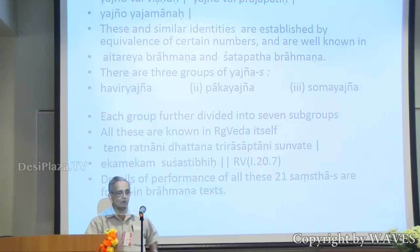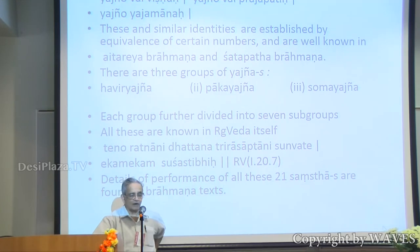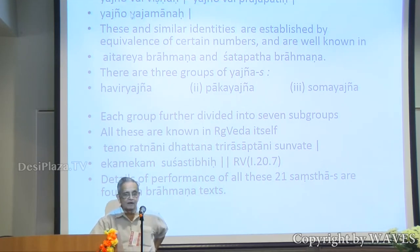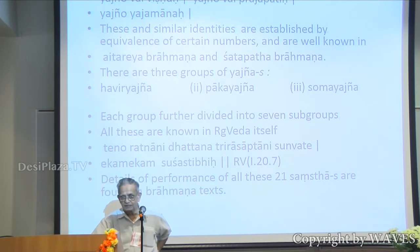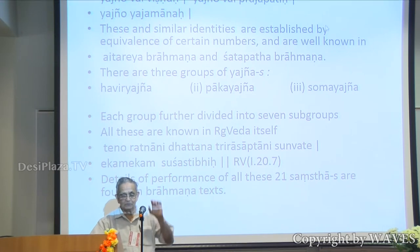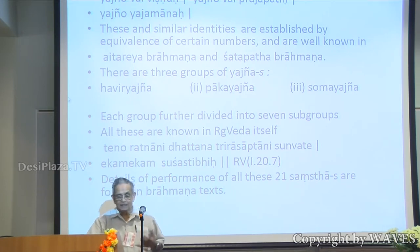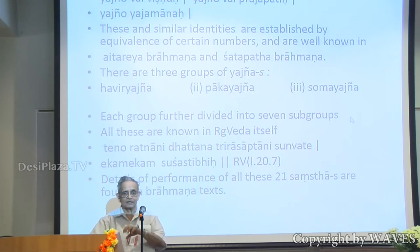Yajna is the fundamental ritual. There are a number of essential identities: Yajna vay Vishnu, Yajna vay Prajapati, Yajna vay Ajmanaha. And there are many such identities. These are established by certain numbers, and we are going to be dealing with some of those. Somebody said this is not a mathematics class — but you will follow mathematics here.